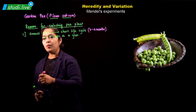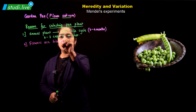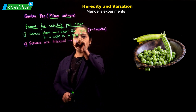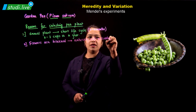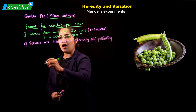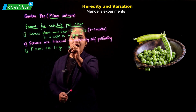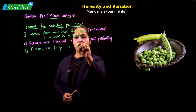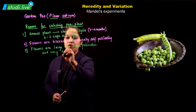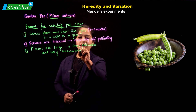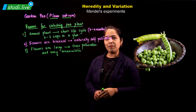The second important reason is that the flowers are bisexual, meaning both male and female parts are present in the same flower, and they are naturally self-pollinating. The flowers are also large enough for cross-pollination, and they can be easily emasculated — emasculation meaning the removal of the stamens, which are the male parts. Once those male parts are removed, the flowers can be easily cross-pollinated.